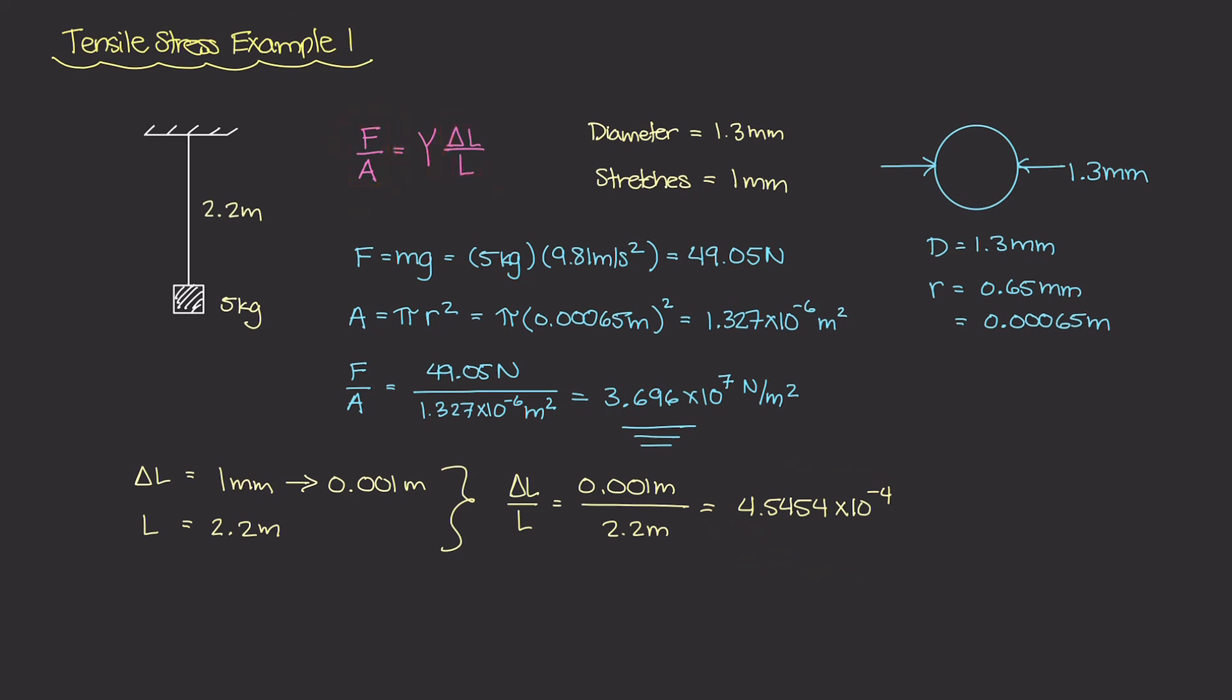So if I rewrite this equation right here in terms of Y, I get the Young's modulus is equal to our tensile stress value, F over A, divided by our strain, which is ΔL over L.